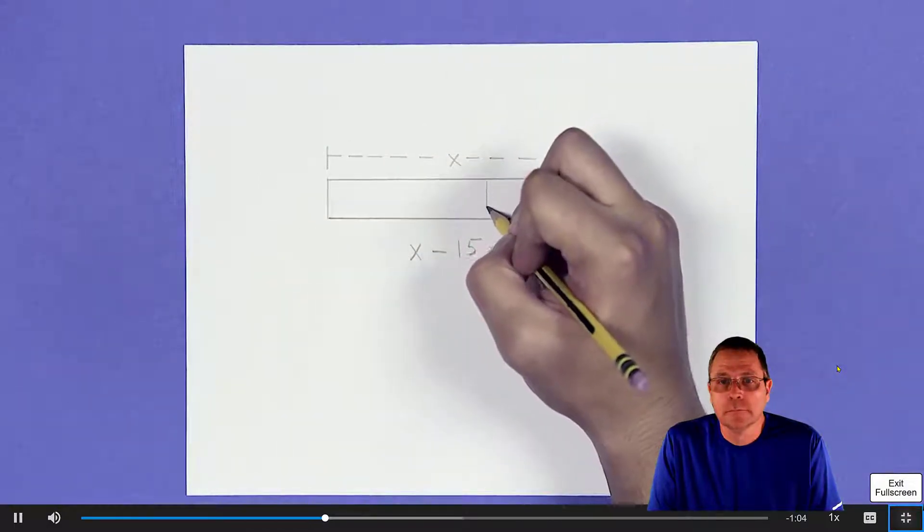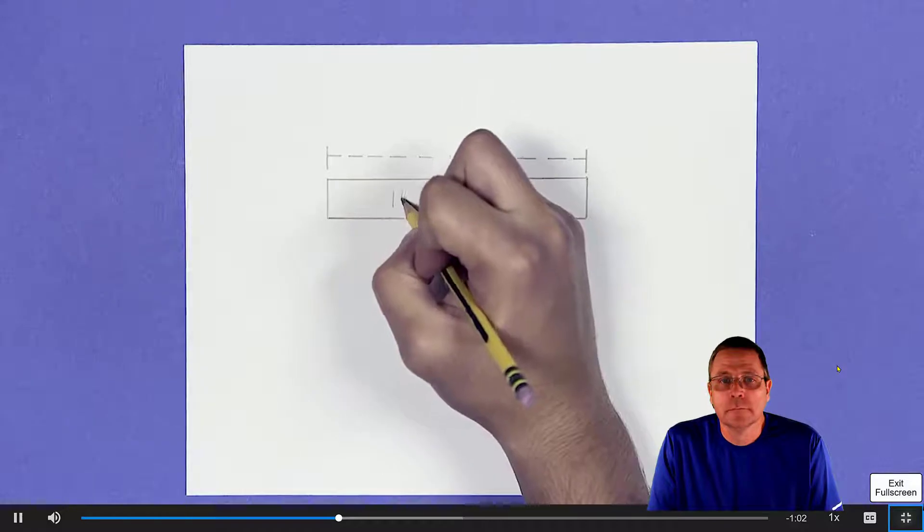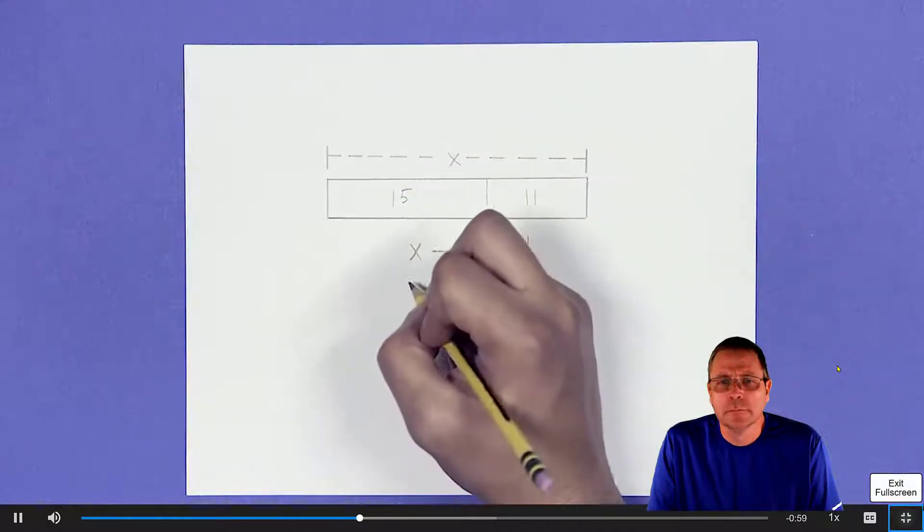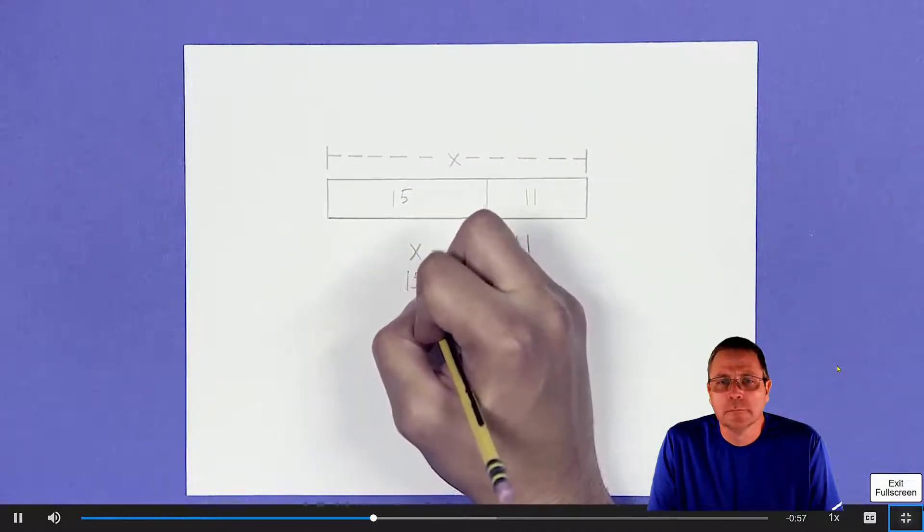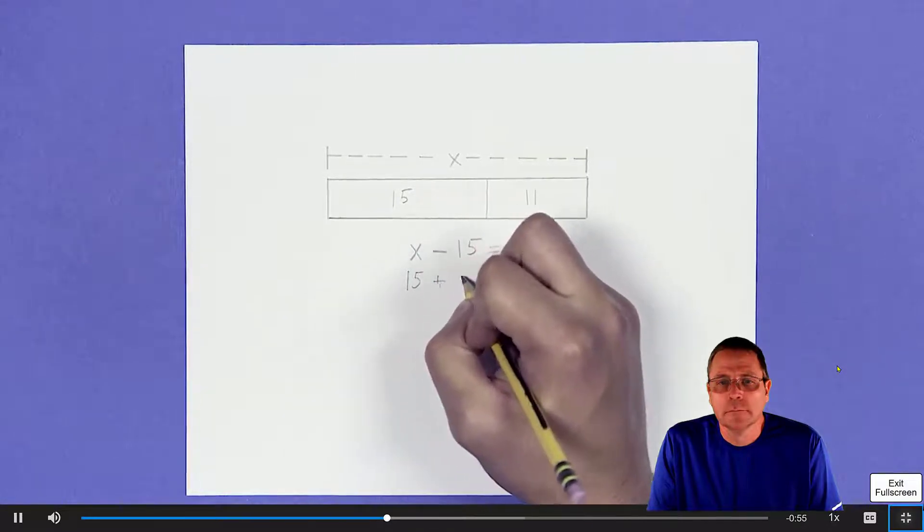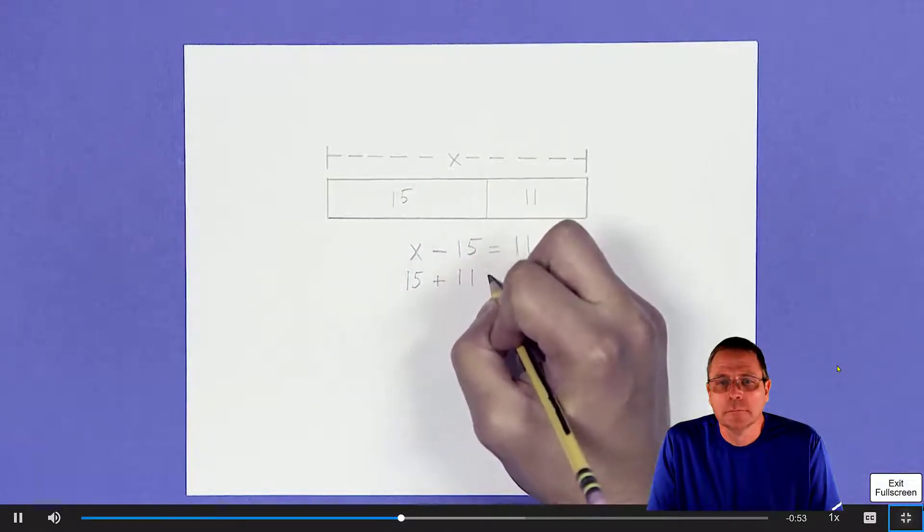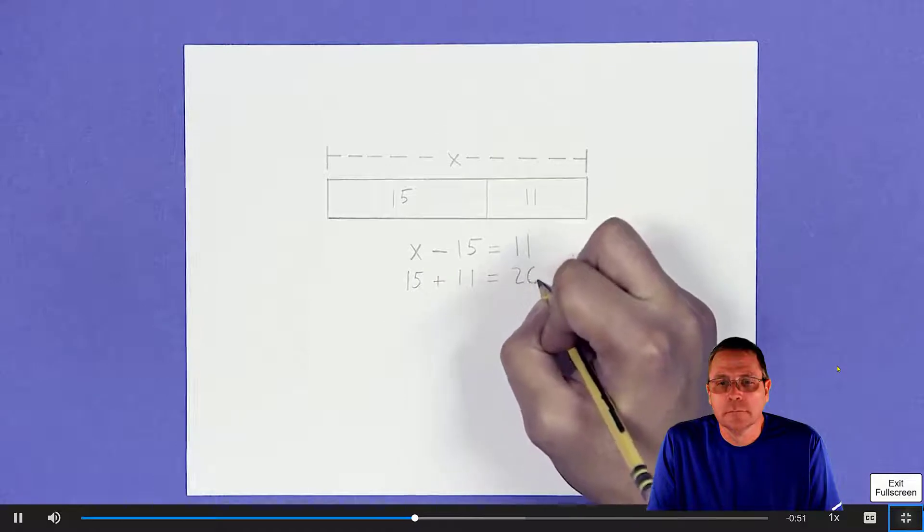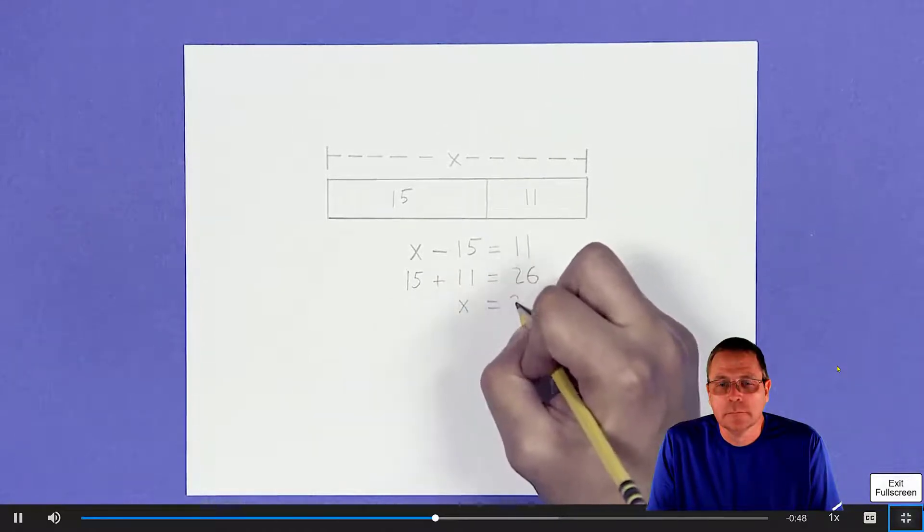Label the bar to show the original amount. Divide the bar into two sections to show the known values, 15 and 11. Work backward to solve the equation. Write the equation as an addition sentence and solve. 15 plus 11 equals 26. That means x equals 26.